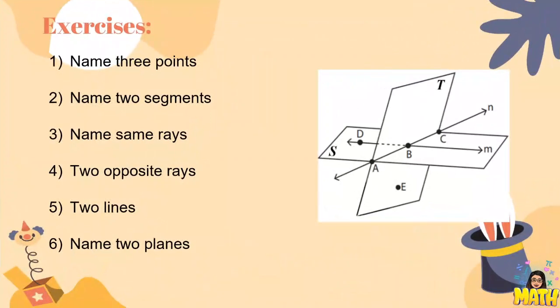So now, let's try to name the following. Let's name three points that we can see in this figure. Here, we can see many points, A, B, C, D, and E.